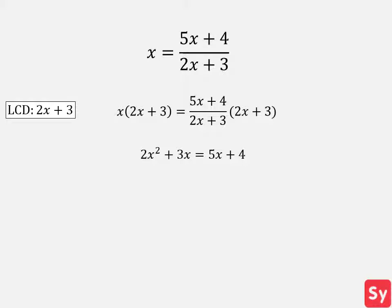We move 5x plus 4 over to the other side of the equation. This equals 2x squared minus 2x minus 4 equals 0. We now have a quadratic equation and we can factor this and get x minus 2 times x plus 1. Now we solve for x and get x equals 2 and x equals negative 1.